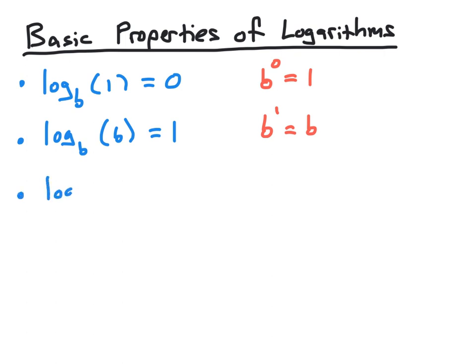We can generalize this second property to say that log base b of b to any power x will always be x. If we translate this to exponential form, we get a statement that says b raised to the x power will equal b to the x power. This looks like a silly statement, but each of the b to the x's come from a different part of the logarithm — one from raising the base b to the value of the logarithm, and the other from the number inside the logarithm. Since those are equal, this property of logs holds.